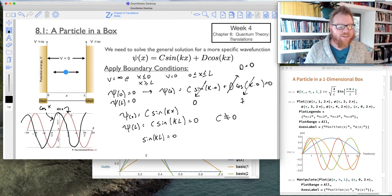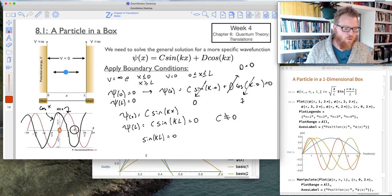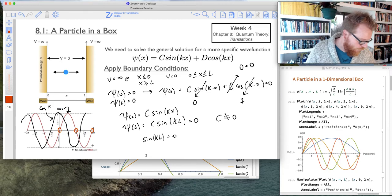So how do we solve this sine kL equals 0? Well, we can say that the sine of k times L has to equal 0. I don't need to worry about my C coefficient, my normalization constant. And now, if we go back and look at this sine graph here in the red for a second, we actually already have the solutions. We know that sine is 0 at x equals 0, at x equals 1 pi, at x equals 2 pi, 3 pi, 4 pi, etc.